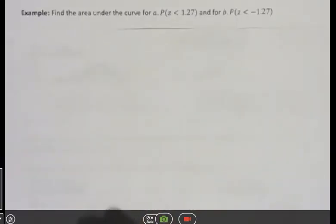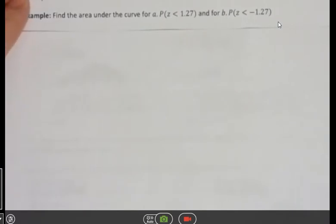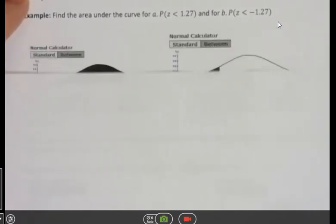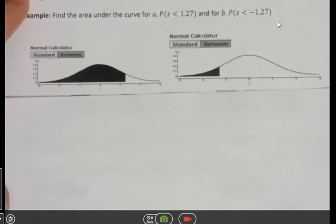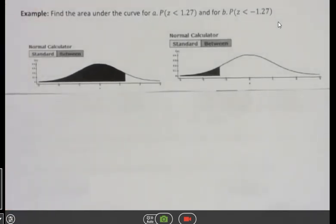So the first one says find the area under the curve for a, probability that z is less than 1.27, and for b, probability that z is less than negative 1.27. Always when you're doing these problems, my strong suggestion is that you first know what the picture looks like. So I have the pictures here that I created in StatCrunch because I wanted to be able to talk about them in the videos.